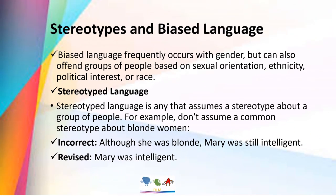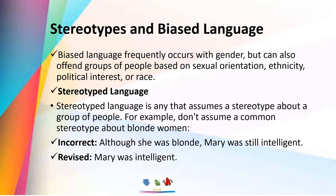Then we have stereotypes and biased language. Biased language frequently occurs with gender, but can also offend groups of people based on sexual orientation, ethnicity, political interest, or race. Stereotype language assumes or stereotypes about groups of people. For example, don't assume a common stereotype about blonde women. Incorrect: 'Although she was blonde, Mary was still intelligent.' Revised: 'Mary was intelligent.'